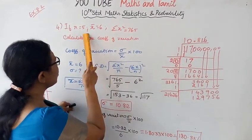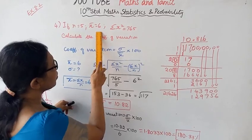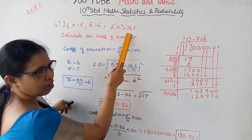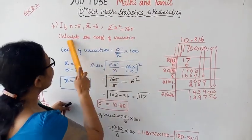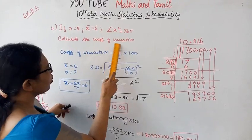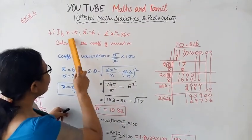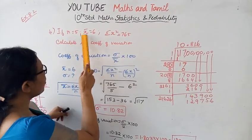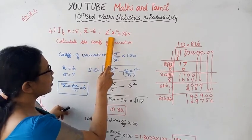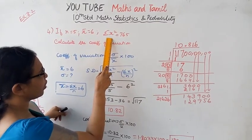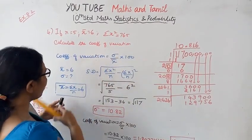If n equals 5, x-bar equals 6, sigma x squared equals 765 — calculate the coefficient of variation. So we have: n=5, x-bar=6, sigma x squared=765. Calculate the coefficient of variation.